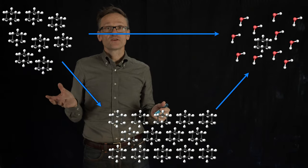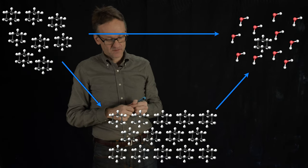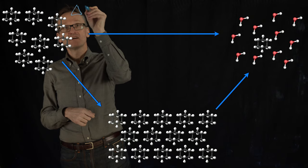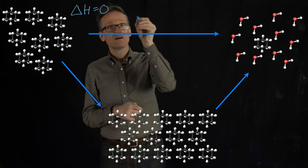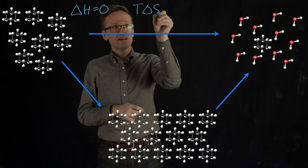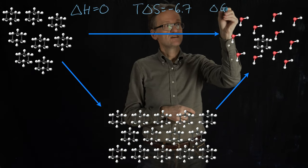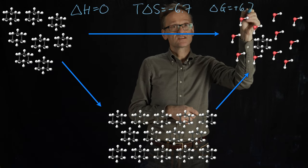So what are the corresponding free energies here? Well, we already knew some of them, right? Here we know that ΔH was roughly 0, TΔS was minus 6.7, and ΔG was equal to plus 6.7.